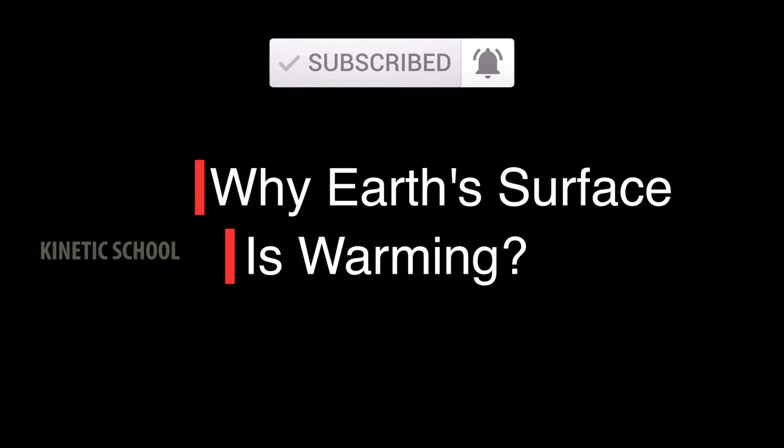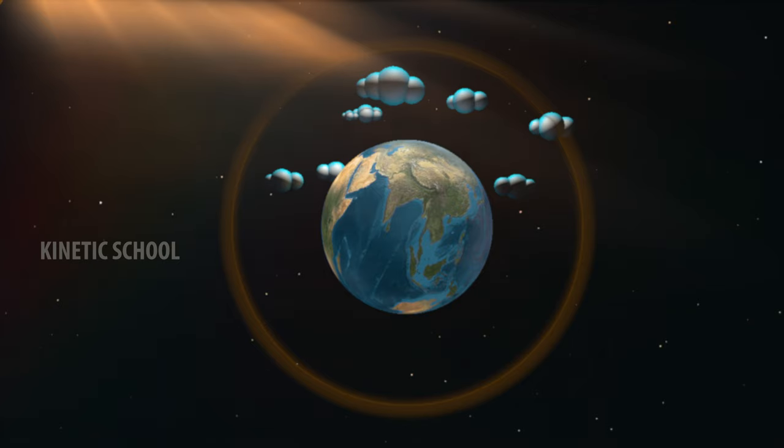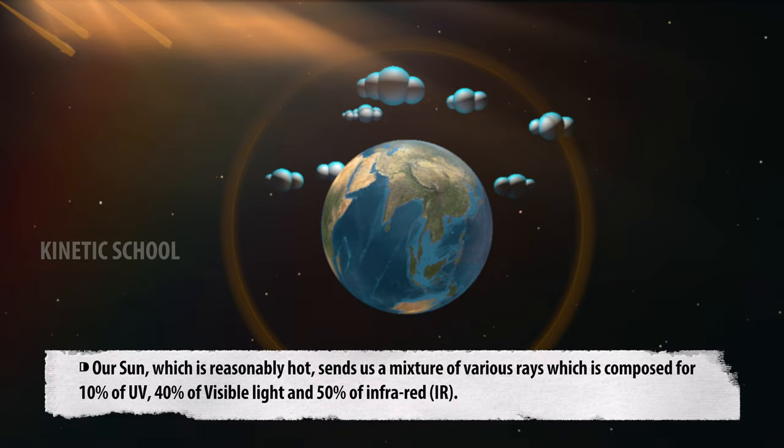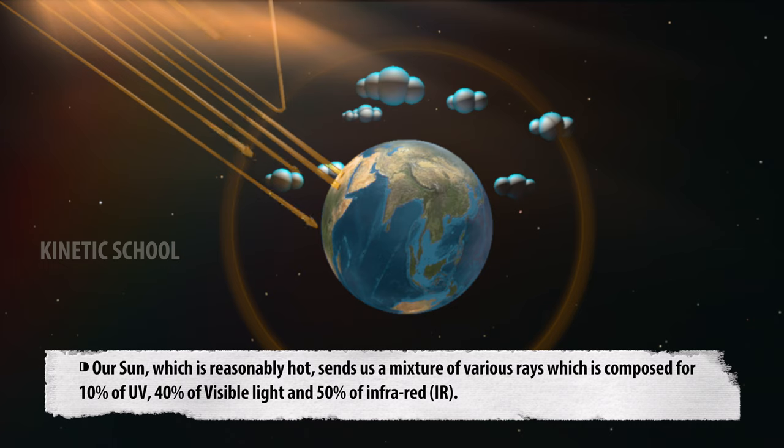Why is Earth's surface warming? Our sun, which is reasonably hot, sends us a mixture of various rays, which is composed of 10% UV, 40% visible light, and 50% infrared.